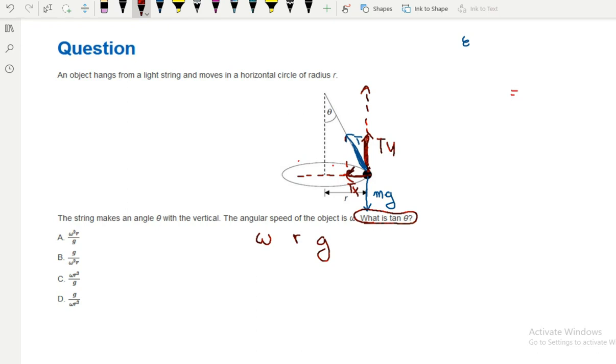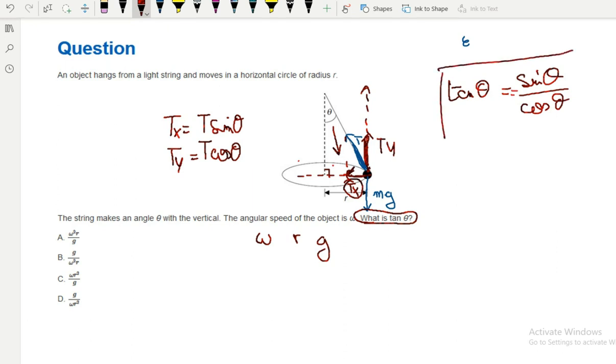First, for Tx, we have a right angle so this side must be the opposite, which means Tx is T, the hypotenuse, times sine theta. Ty is the adjacent, so it's T cosine theta. I'm looking for tangent, so I know that tangent theta is sine theta divided by cosine theta. I'm gonna use this later.